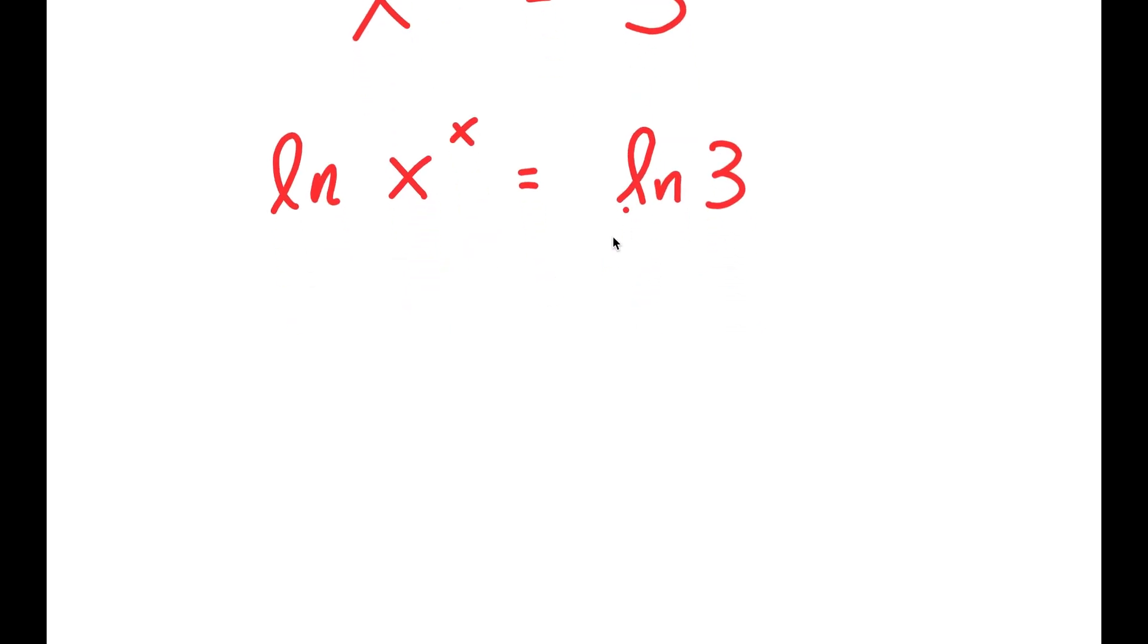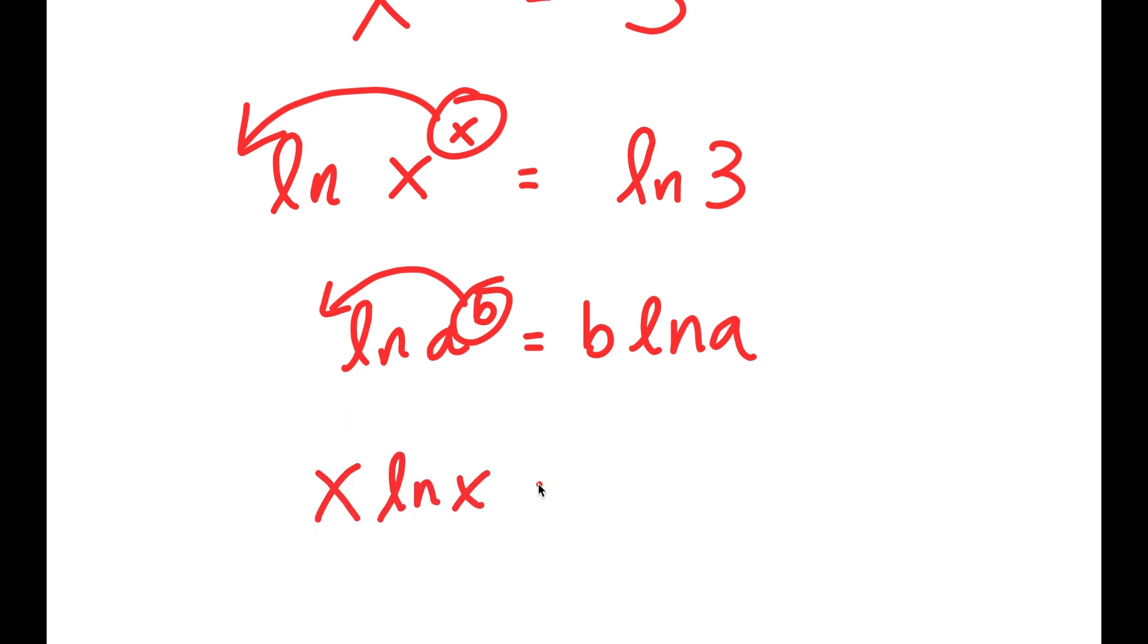Now, an important property of logarithms is that if I have something in the form ln a to the power of b, I can move this exponent b to the front, so this turns into b times ln a. So in this case, I have ln x to the power of x, and I can move x to the front, so I get x times ln x is equal to ln 3.